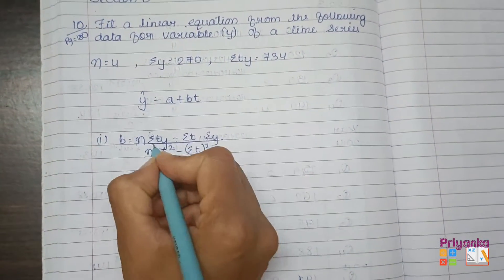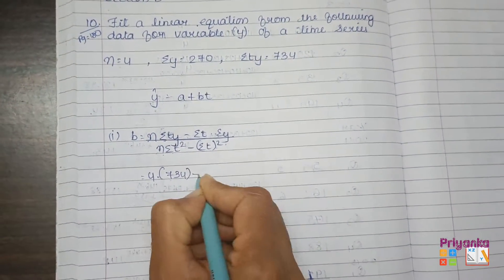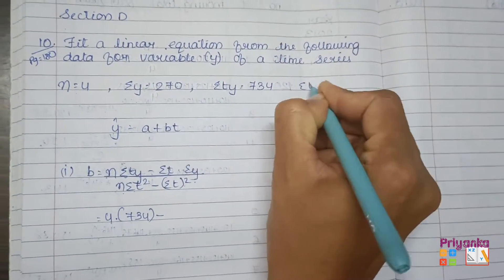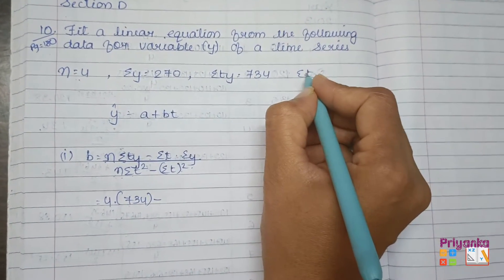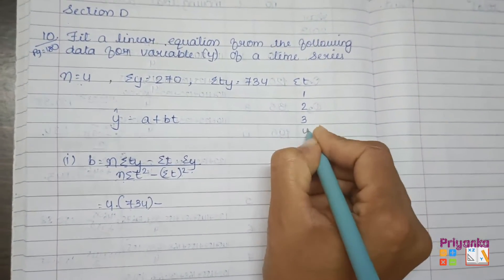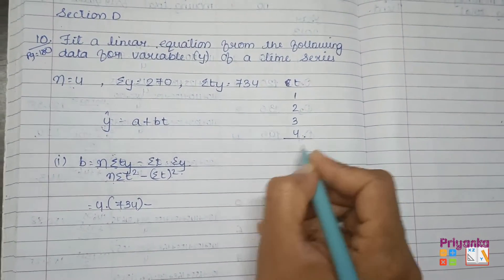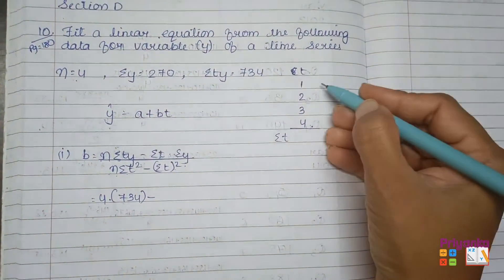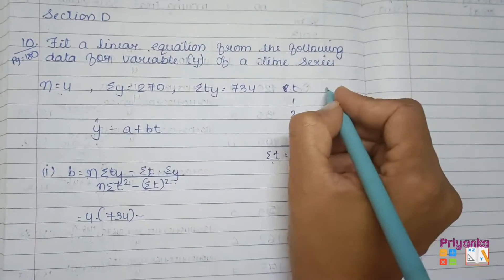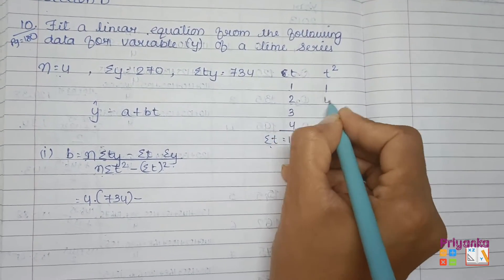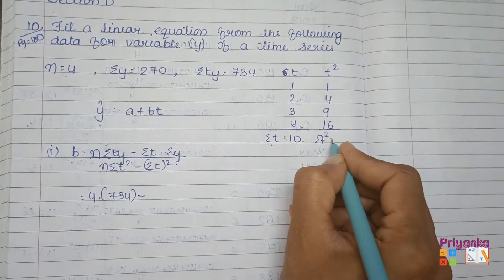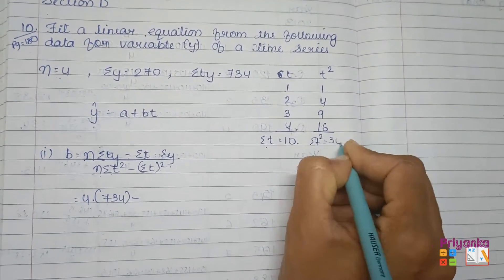Out of the question, just check what information has been given. The value of n is 4, ty is 734. Now we need sigma t which is not given in the question, so first we'll find out sigma t. As the number 4 is given, sigma t is the total of t column. The t column is just ascending numbers 1, 2, 3, 4. So sigma t will be 1 plus 2 plus 3 plus 4, that is 10. Next we need t square: 1 squared is 1, 2 squared is 4, 3 squared is 9, 4 squared is 16. The total of this column will be sigma t square and it will be 30.